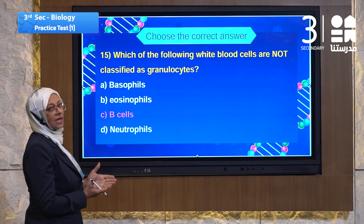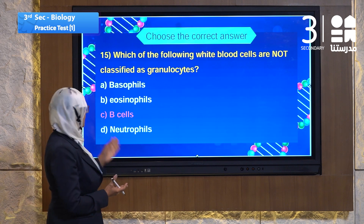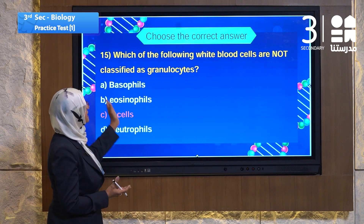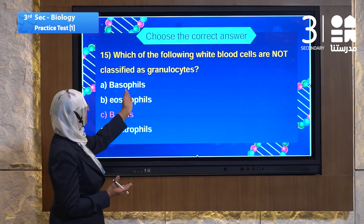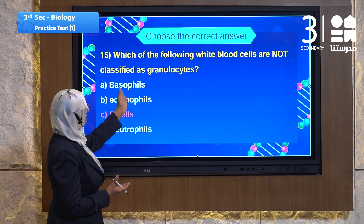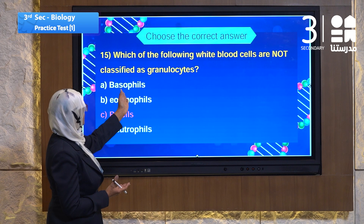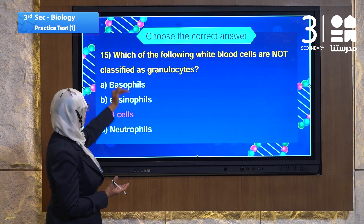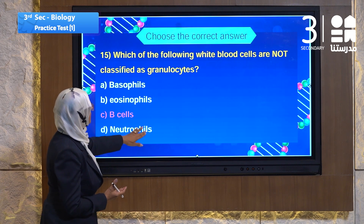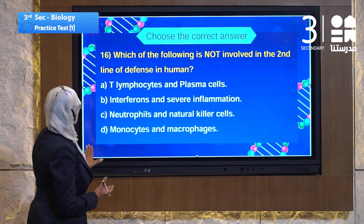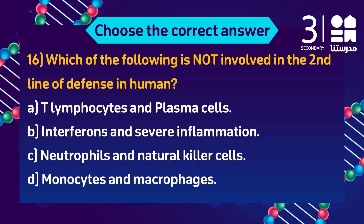The answer will be B — those cells are not granulated, but the others are granulated. Question 16: Which of the following is not involved in the second line of defense in humans? That means all of them are second line except one.